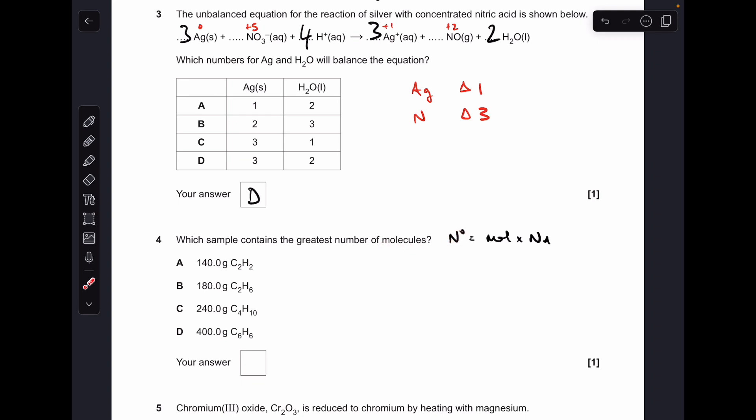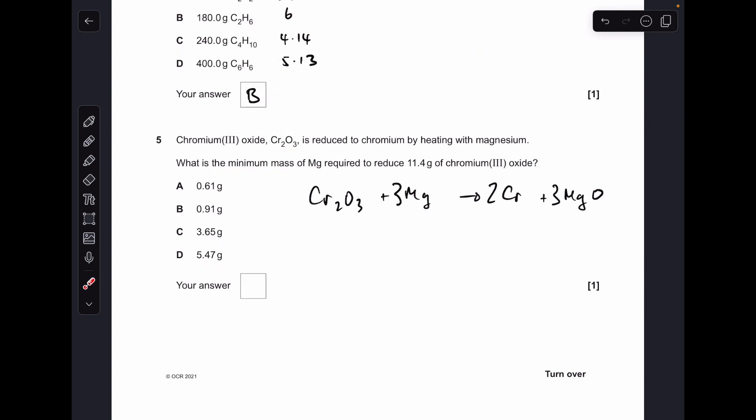Moving on to number four. So to get the number of things, or molecules in this case, we work out the moles and multiply by Avogadro's number. So first thing I need to do is work out how many moles of these we've got. That was just mass over Mr each time. And you can see B has the largest number of moles, so it will have the largest number of molecules.